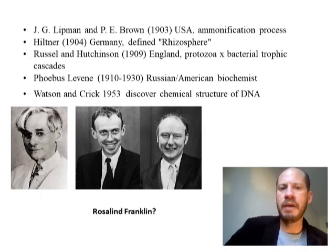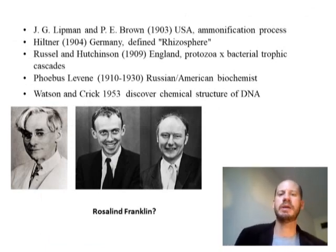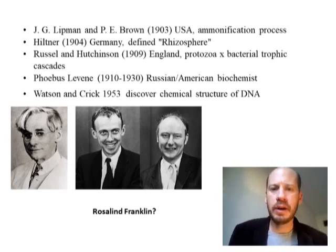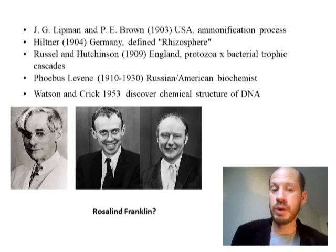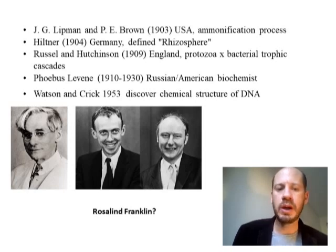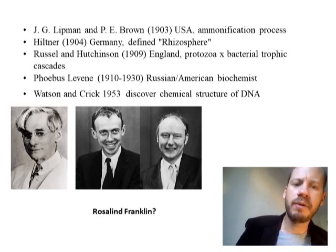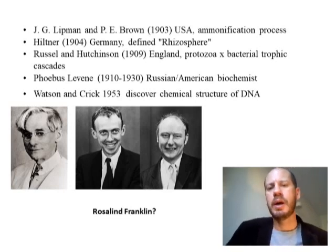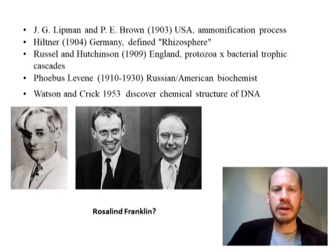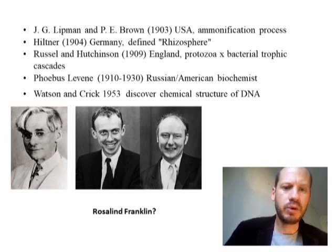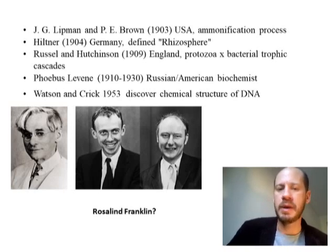In 1903, Lipman and Brown described the ammonification process from the nitrogen cycle. We also have Hiltner in Germany defining the very important term 'rhizosphere' — how the microbial community was so different when in contact with the roots compared to the bulk soil, and how roots were conditioning that microbial community and all the functions those microbes perform. We also have Russell and Hutchinson in England, who were important for describing the trophic relationship between protozoa and bacteria — protozoa eating bacteria and thereby increasing the cycling of different elements in that system.